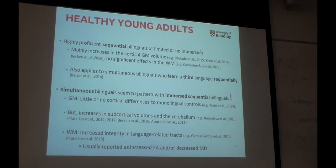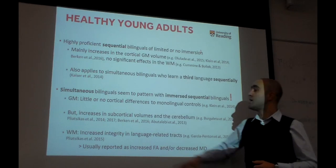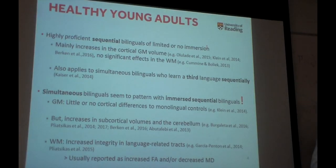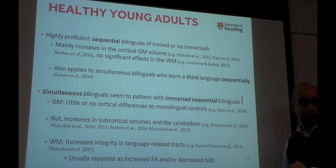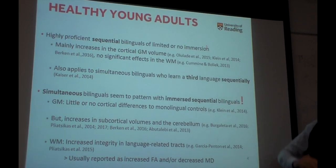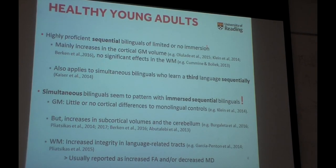When you compare simultaneous and immersed sequential bilinguals to monolinguals, you get pretty much nothing when it comes to the cortex, or very little effects on the gray matter of the cortex, but increases in subcortical volumes and the cerebellum in these experienced groups, and also increased integrity in white matter — especially the white matter tracts related to language processing. So: non-experienced bilinguals show cortical gray matter effects; experienced bilinguals show subcortical gray matter effects and white matter effects.